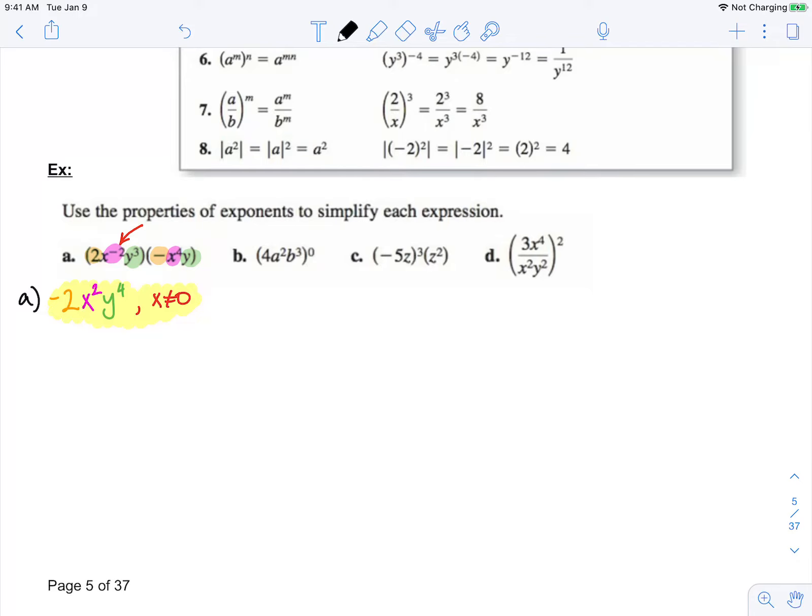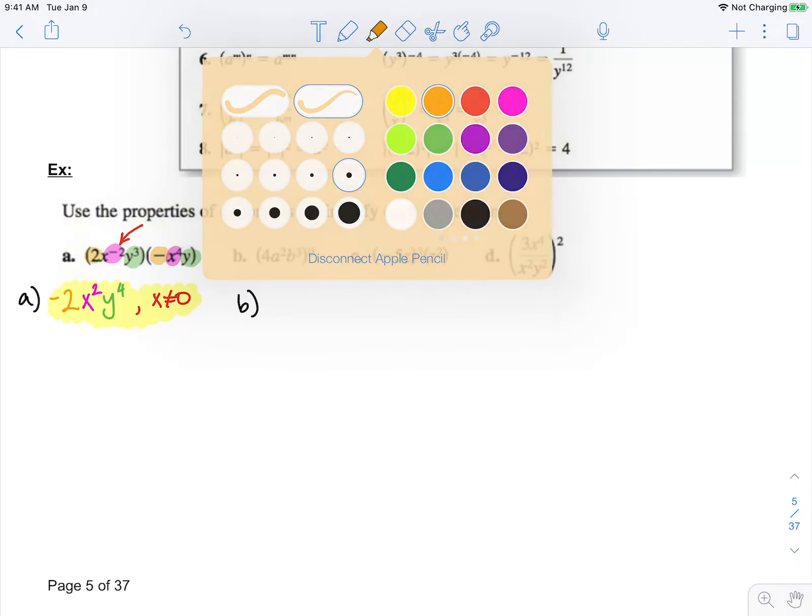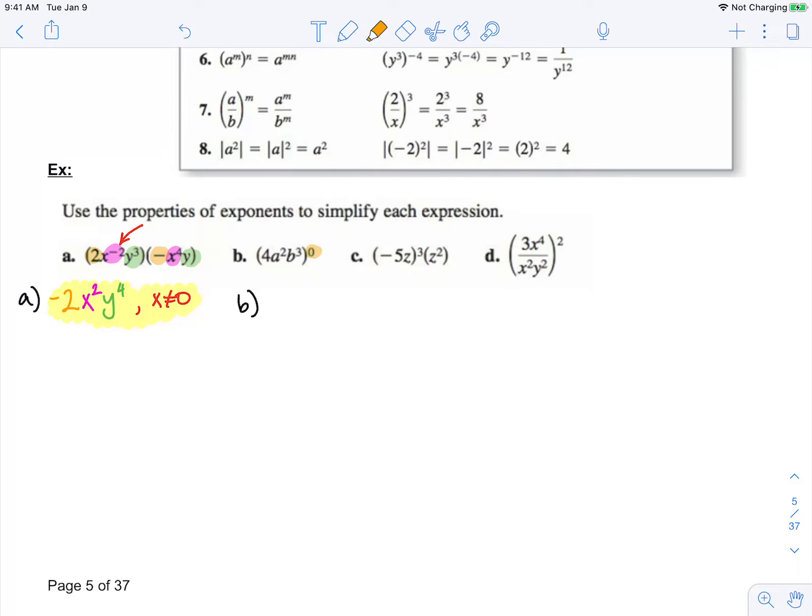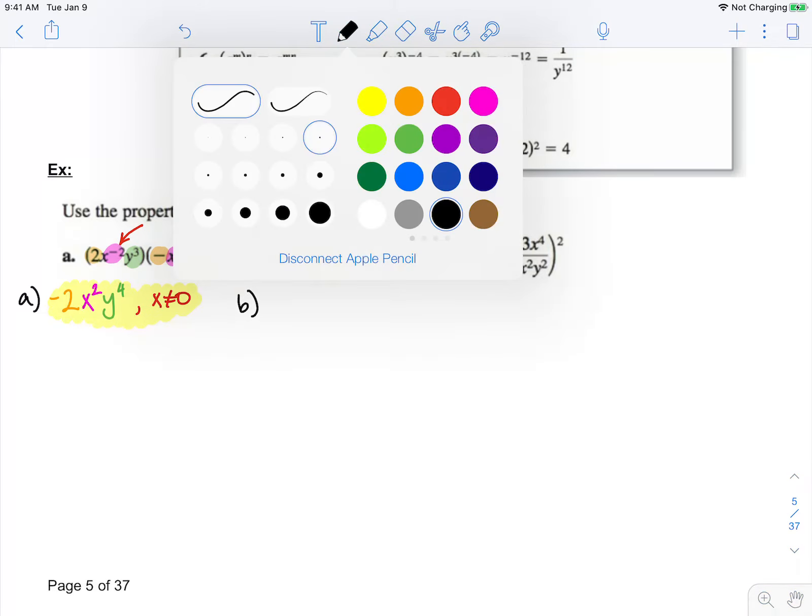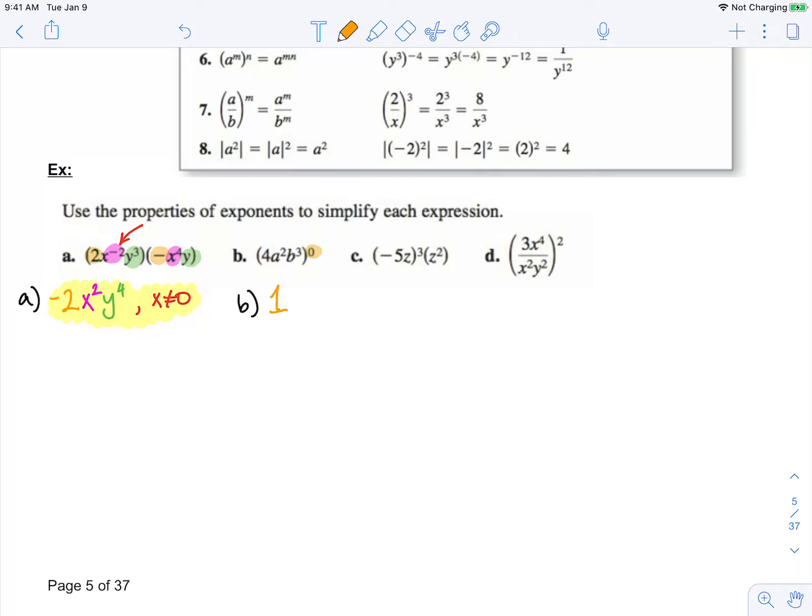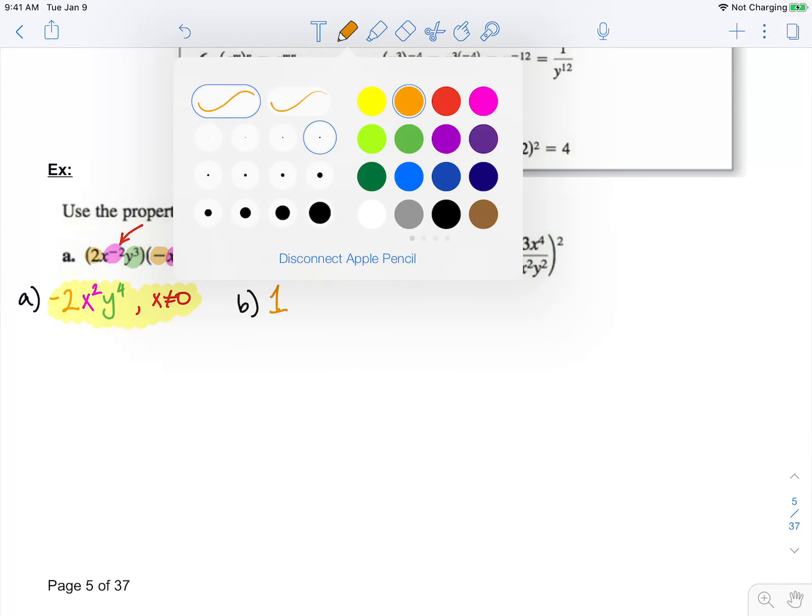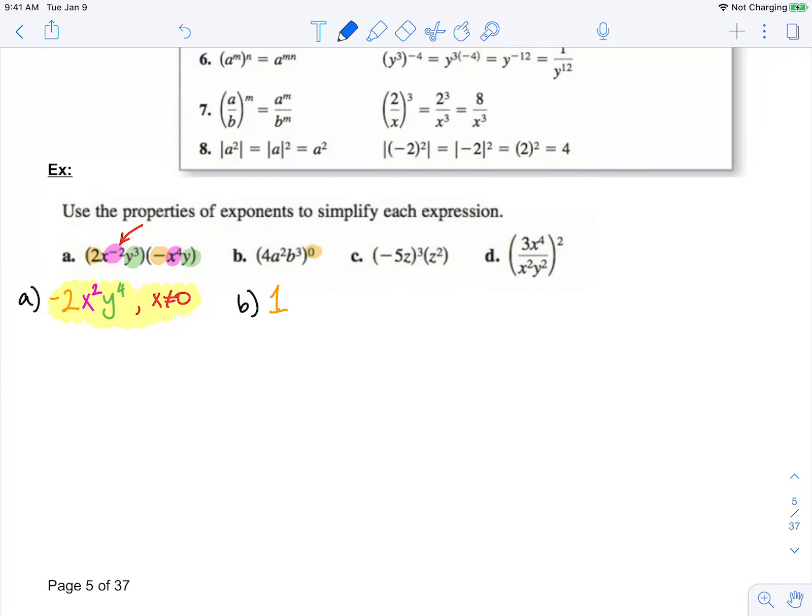In Part B, we have everything in this parenthesis being raised to the zero power. We remember anything raised to the zero power is 1, except for zero. So remember, our bases here cannot be zero if we're raised to the zero power. So we know a cannot equal zero, and b cannot equal zero, because we cannot raise zero to the zero power.